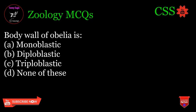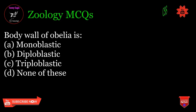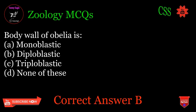Body wall of Obelia is: A. Monoblastic, B. Diploblastic, C. Triploblastic, D. None of these. Correct answer: B.